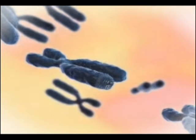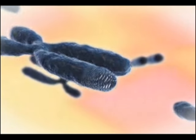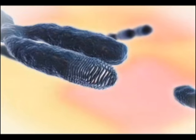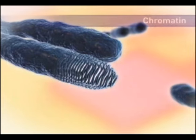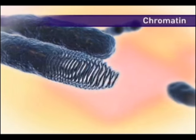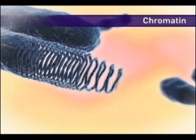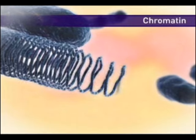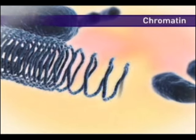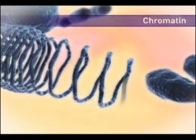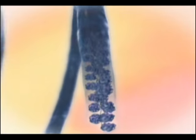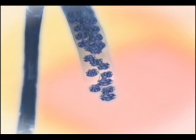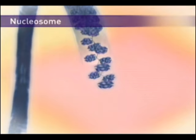Within the chromosome, DNA is packaged into chromatin. Chromatin consists of DNA, structural histone proteins, and non-histone proteins. Within chromatin, the repeating unit is the nucleosome.